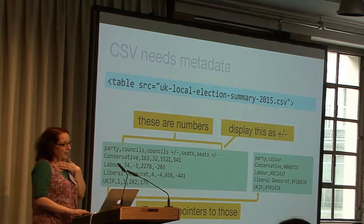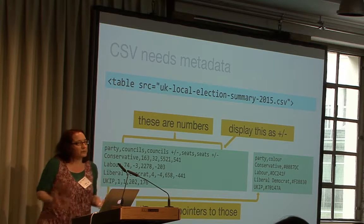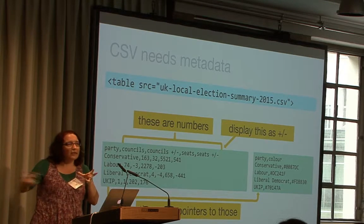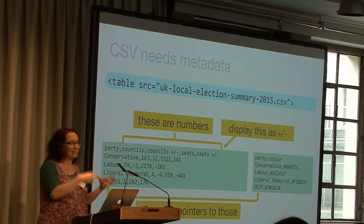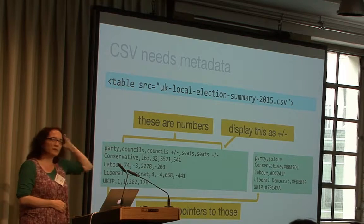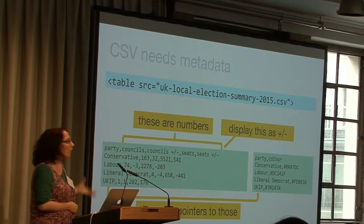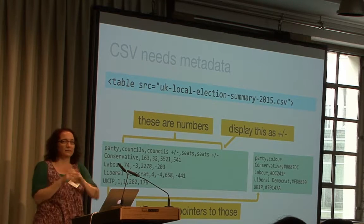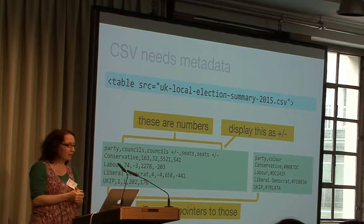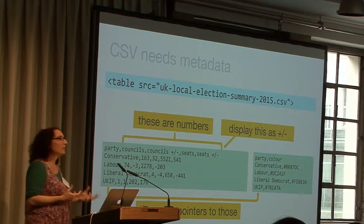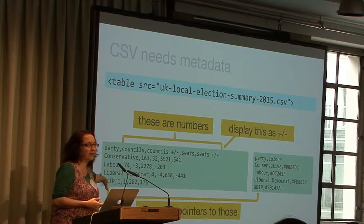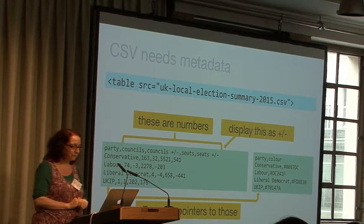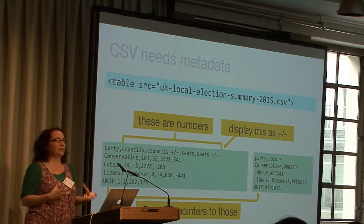First, about discovery. In order to properly present CSV in a table, to get sorting right, to get any pulling in of extra information working properly, you need metadata associated with the CSV file. In those two CSVs I showed earlier, you need to be able to say these columns contain numbers — that's a bit of metadata. You need to specify how it's displayed, and you need to point out that the party column is a pointer to the party column on the right so you can pull in extra information about color. So you need metadata to add to your CSV file so that you understand it properly.